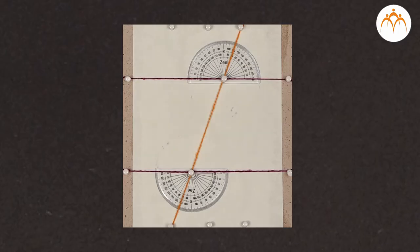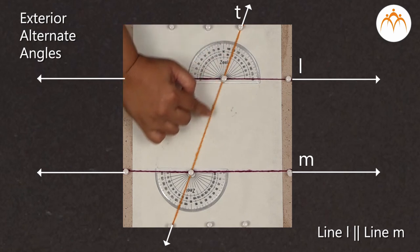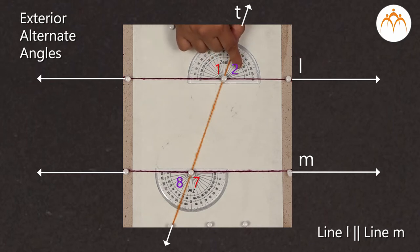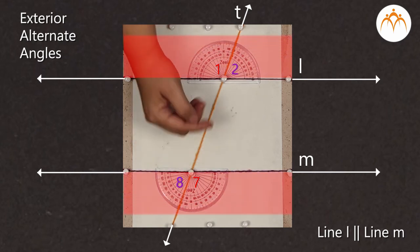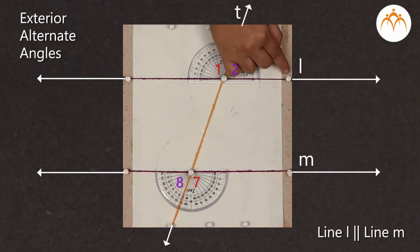In this video, we are going to study about the exterior angles and pairs of exterior alternate angles. You know that when 2 parallel lines are cut by a transversal, 8 angles are formed, out of which angle 1, angle 2, angle 7 and angle 8 get formed in the exterior of the region formed by these 2 parallel lines, line L and line M.